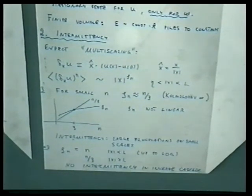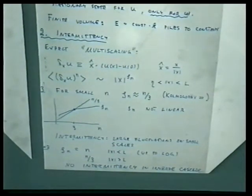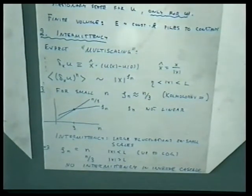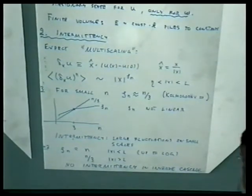This phenomenon is called multiscaling or intermittency — there is a whole spectrum of Hölder exponents. It seems you are not dealing with a function that is Hölder continuous of a certain degree with high probability, but one that has a whole spectrum of Hölder continuity properties. In two dimensions, there is a striking difference: for short distances it seems differentiable in some sense, whereas for large distances it follows Kolmogorov theory exactly — even the logarithmic corrections don't seem to be present experimentally.